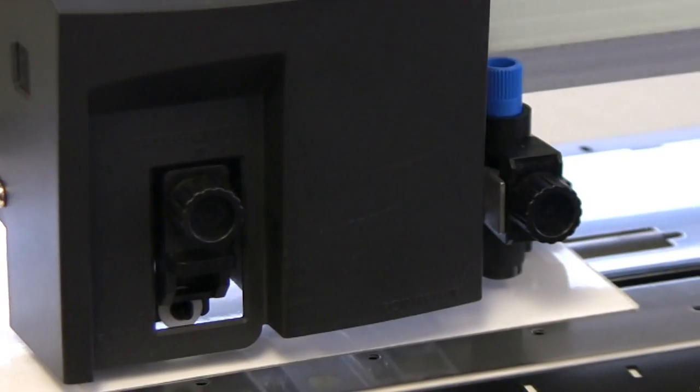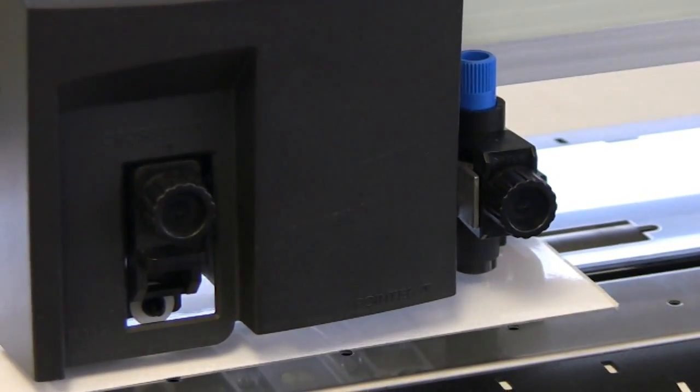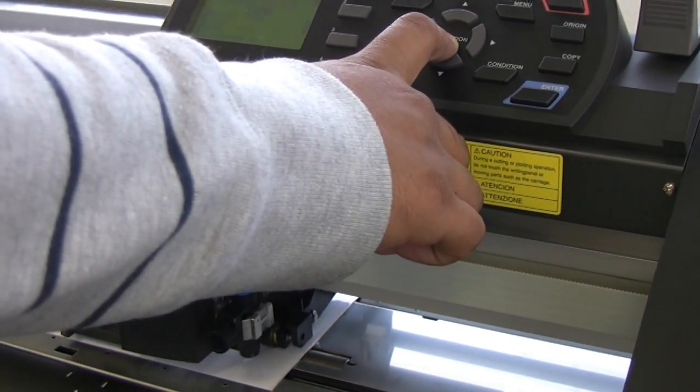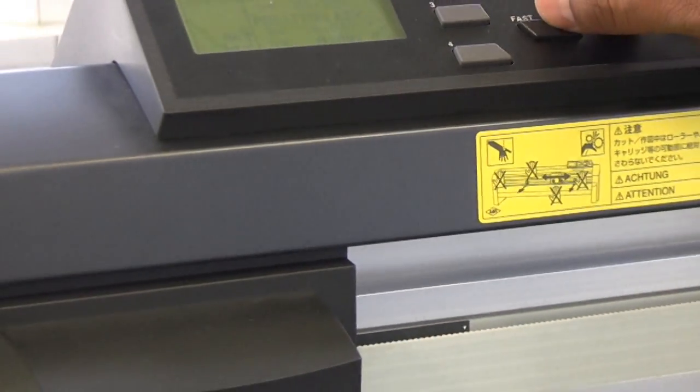When not using the auto scan mark feature, you need to manually position the tip of the blade inside the bottom right-hand corner registration mark by using the control panel's position buttons.